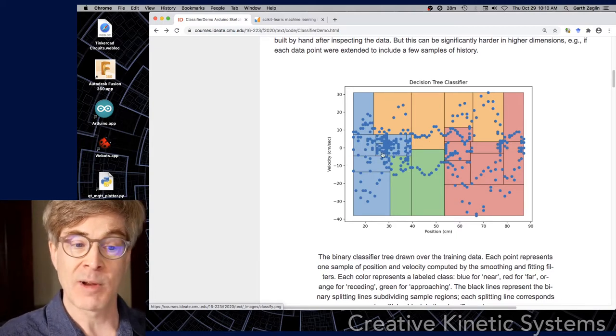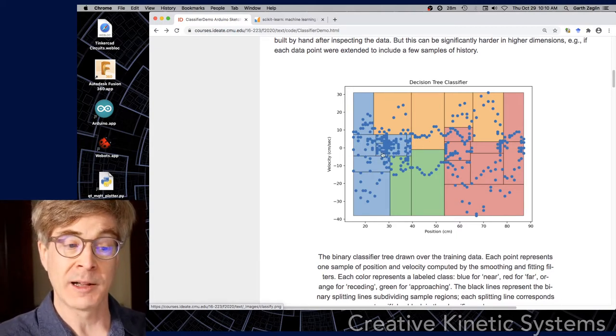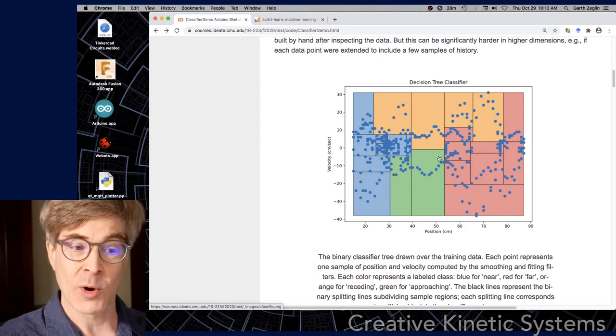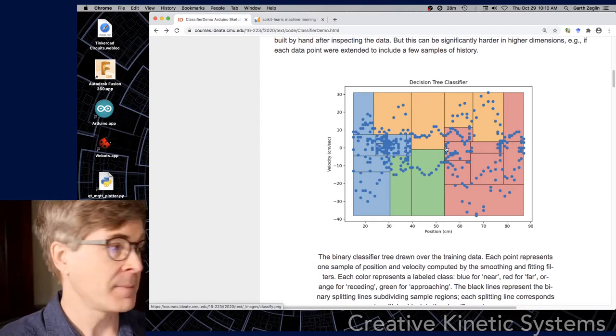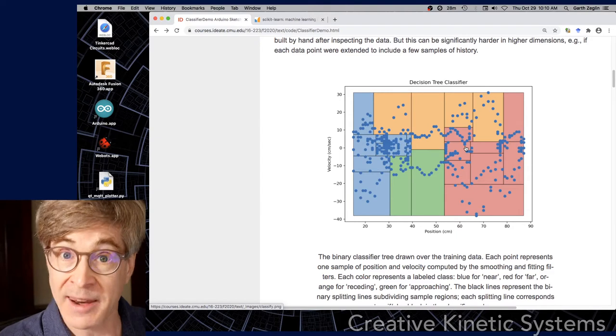And the color coding in this particular plot is showing the output of the classifier. Blue for close, red for far, green for approaching, and orange for receding, like moving away.